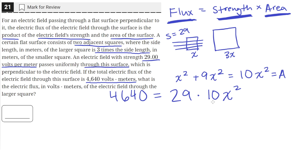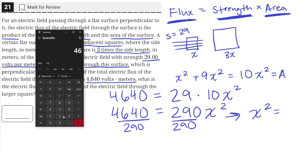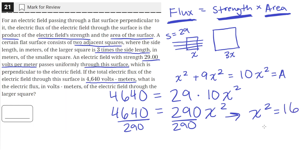Let's multiply the two constants — the coefficient 29 with 10 — so on the right-hand side we get 290x squared. The left-hand side stays the same. Then let's divide both sides by 290. This tells us that x squared is equal to 4,640 divided by 290, which equals 16. Taking the square root of both sides gives us x is equal to 4.